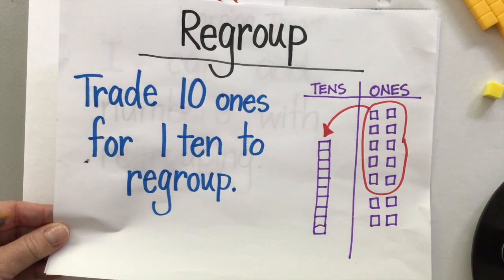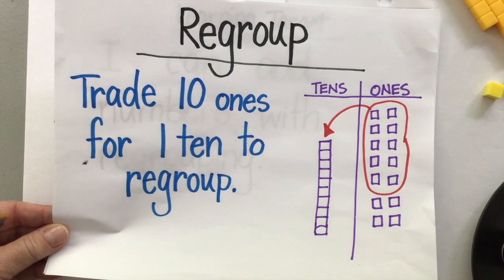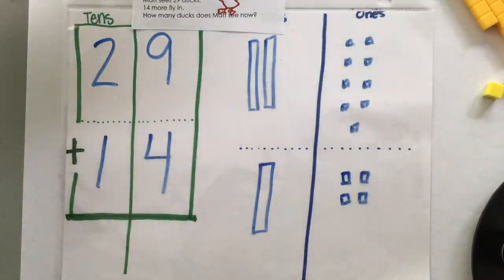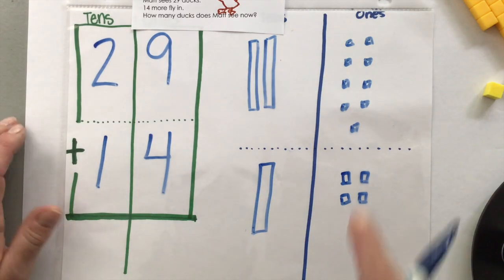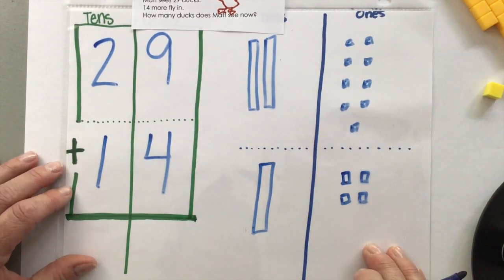Okay. Can we regroup? We want to know if we can trade 10 ones for one 10 and make a group.